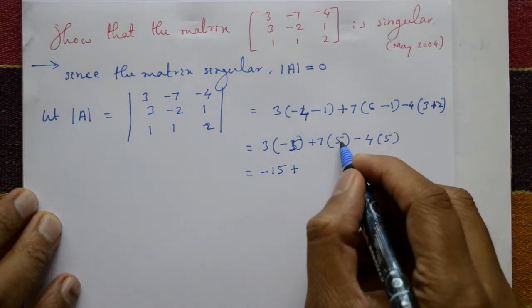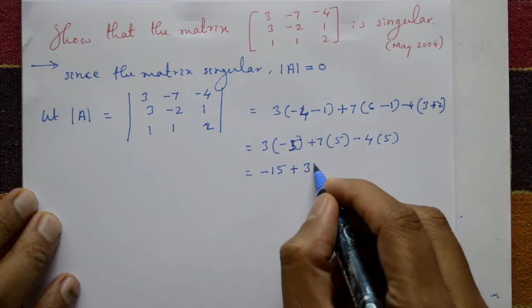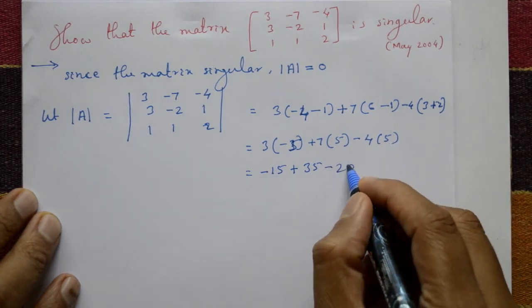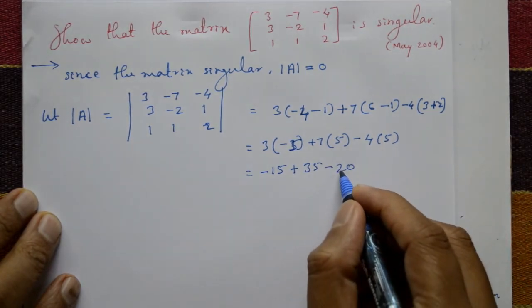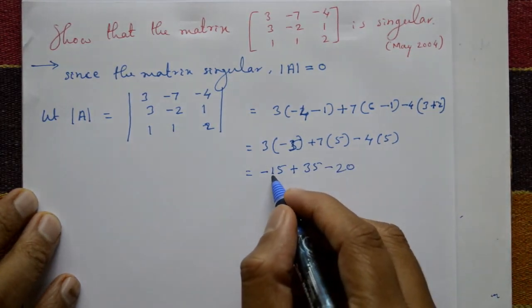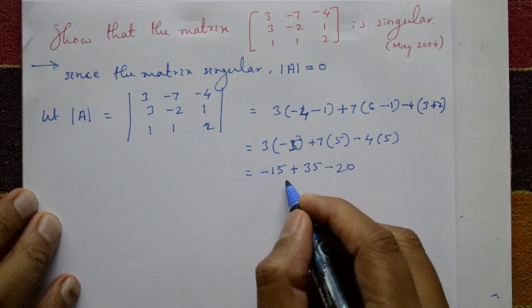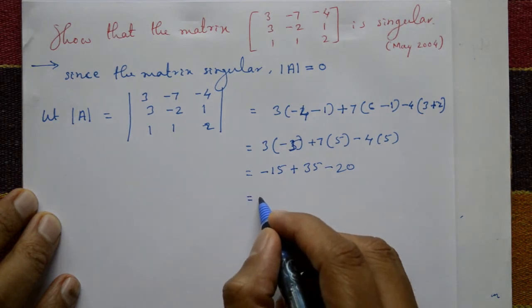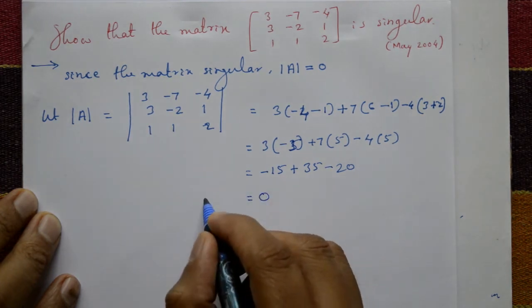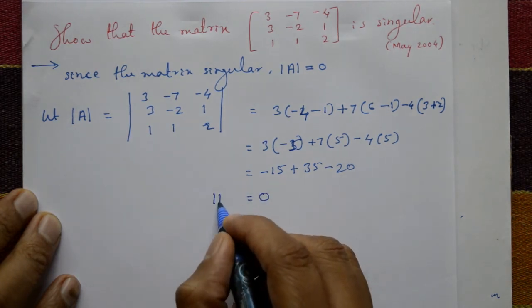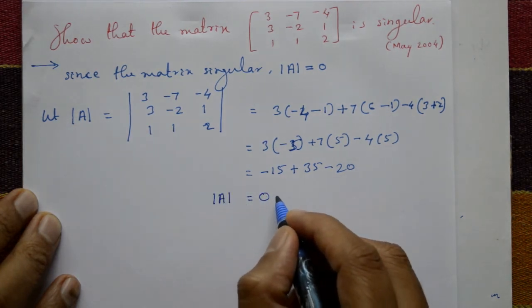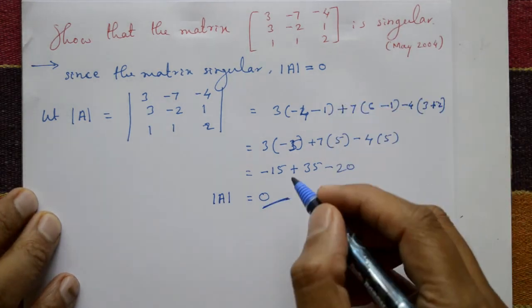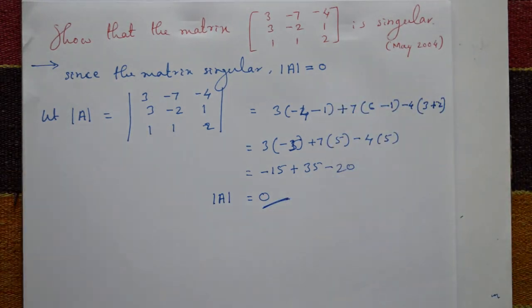Adding these up: -15 + 35 - 20 = 0. Therefore, the determinant of A is equal to 0, which proves that the given matrix is a singular matrix.